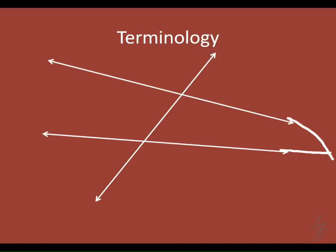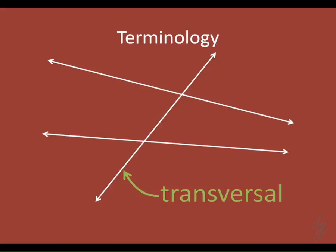The term we're introducing here is more of an introduction to parallel lines. That line that crosses or intersects two other lines — a go-between line — where we look at angle relationships at each intersection: that is called a transversal. A transversal is a line that intersects two other lines.